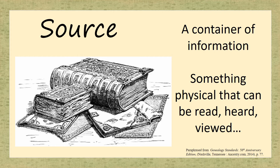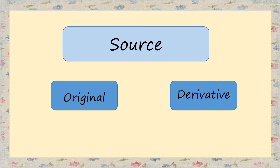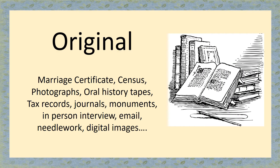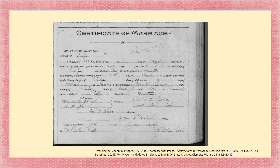Sources come in two varieties. The first is an original source. Original sources are things like a marriage certificate, census records, photographs, oral history tapes, tax records, journals, monuments, an in-person interview, an email, needlework, or digital images. This marriage record of William Eckers and his bride Althea Ireland is an original record — these are things we are used to seeing.